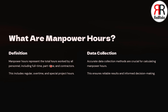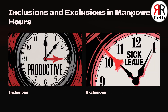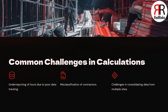Manpower hours include all hours worked by full-time, part-time, and contract employees — encompassing regular, overtime, and special project hours. You should include productive hours, paid and unpaid overtime, and temporary worker hours. Sick leave and unpaid breaks are excluded. Real-life challenges include under-reporting, poor tracking, misclassifying contractor hours, and consolidating data across sites.